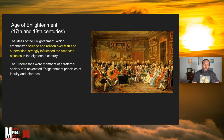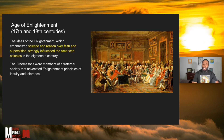From the 17th to the 18th centuries, the idea of Enlightenment, which emphasizes science and reasoning over faith and superstition, strongly influenced the American colonies in the 18th century. These were supposed to be the great thinkers of the world — the great minds that came together in the U.S. to bring a different thought to how everything happens through science and reason.